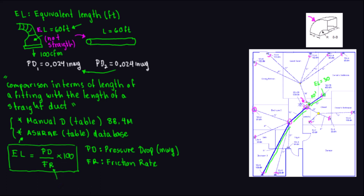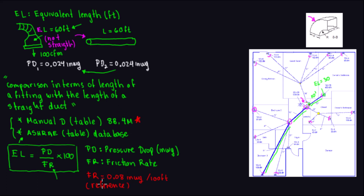The reference friction rate that Manual D uses is 0.08 inches of water gauge per 100 feet. That is the reference friction rate used in the equivalent length formula: FR = 0.08 inches of water gauge per 100 feet.